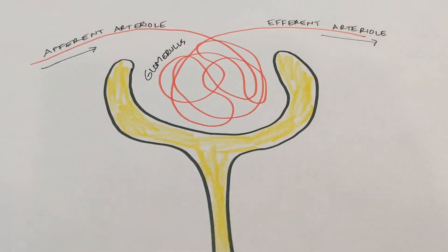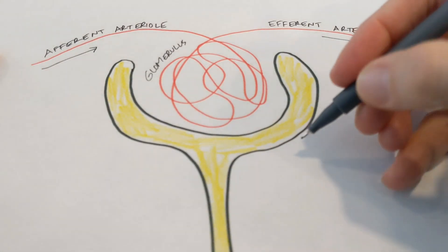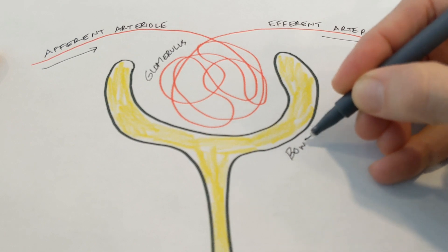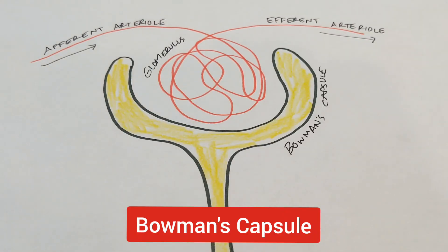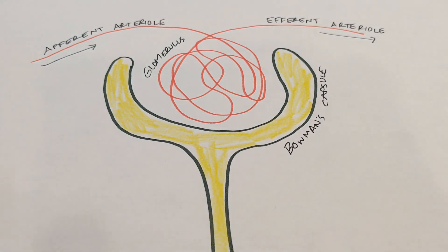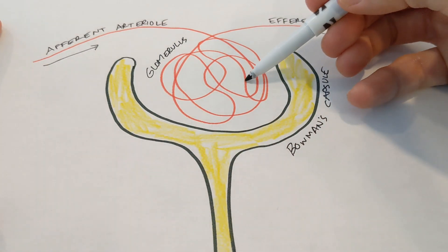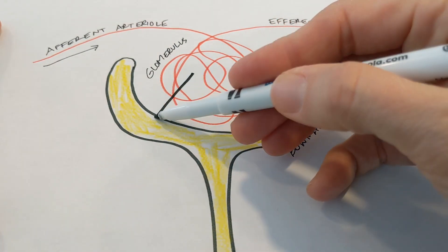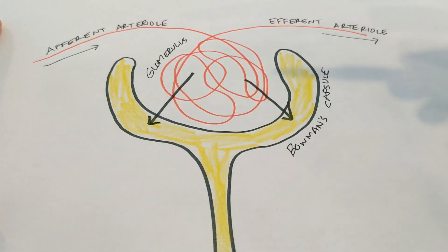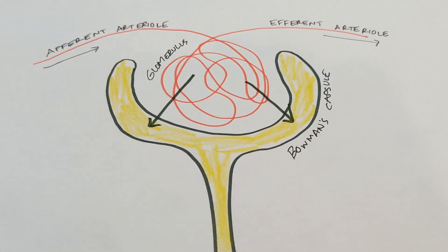Now draw yourself a little cup-shaped structure and color it yellow. This is Bowman's capsule. The glomerulus sits down in the Bowman's capsule and the materials being filtered out of the blood from the glomerulus pass into Bowman's capsule. I'm going to draw arrows showing that the materials are coming from the glomerulus into Bowman's capsule. This is the site of filtration of a nephron within the kidney.